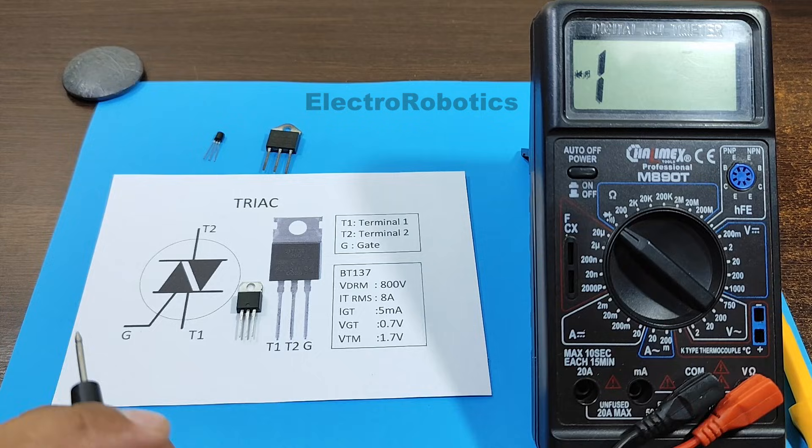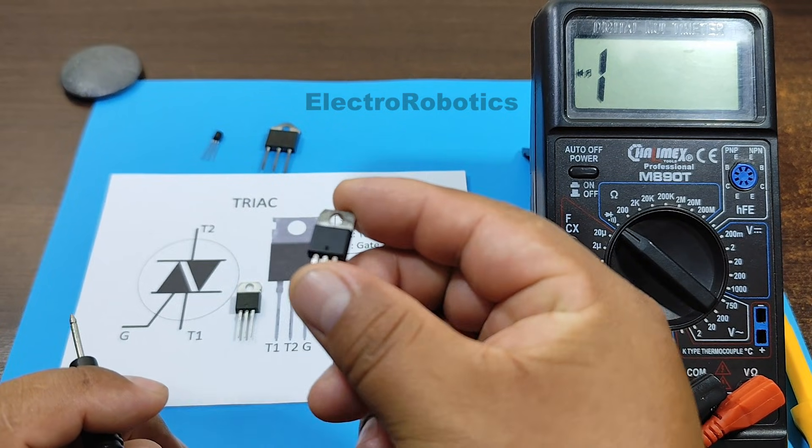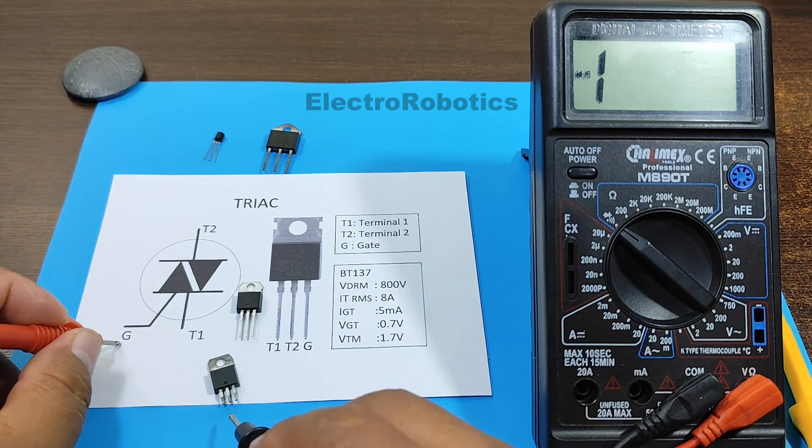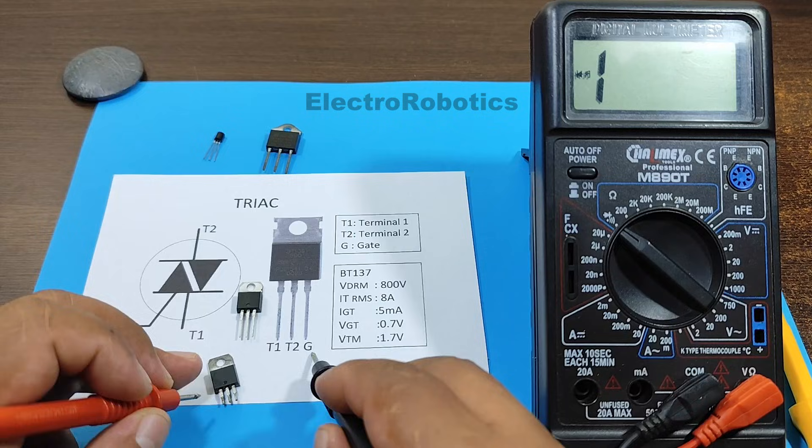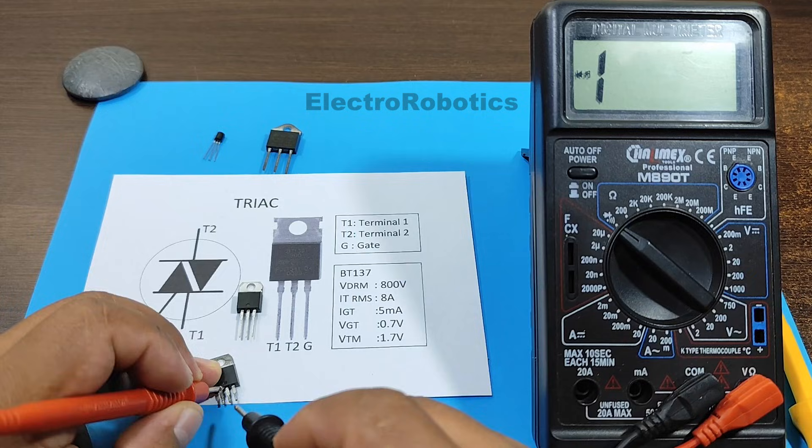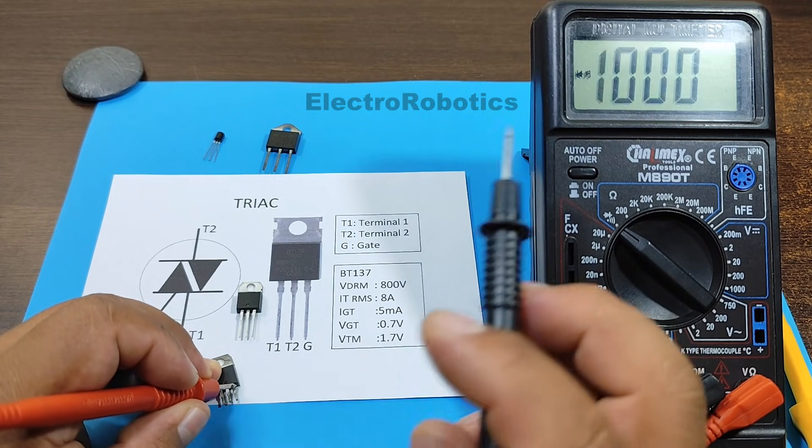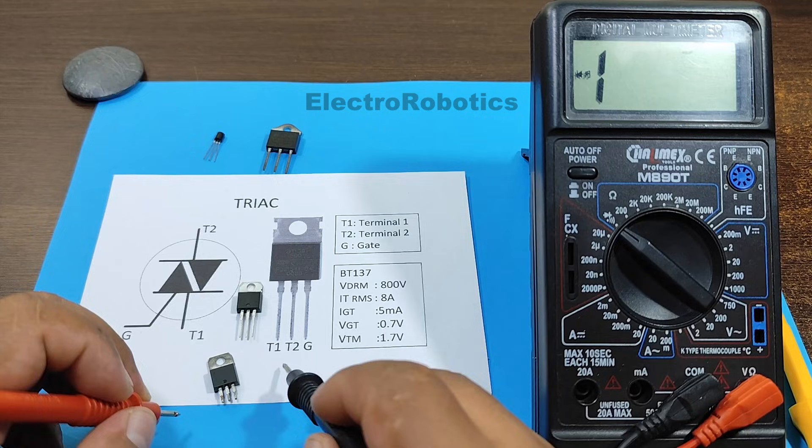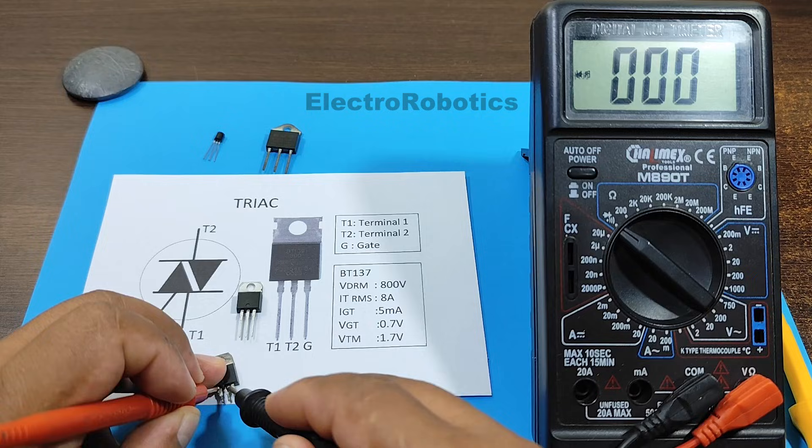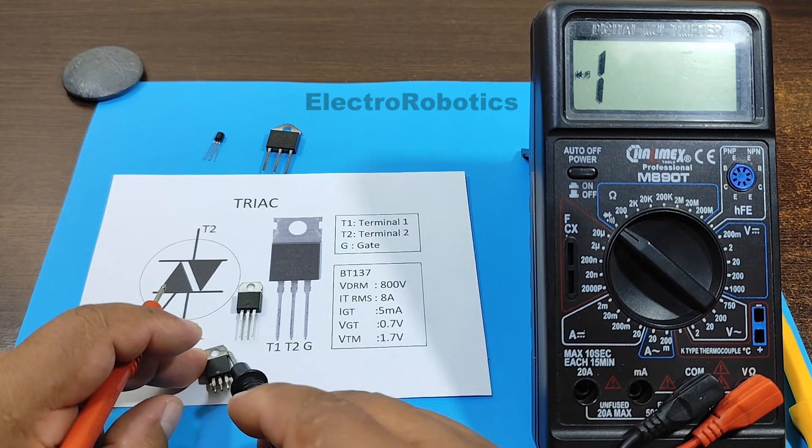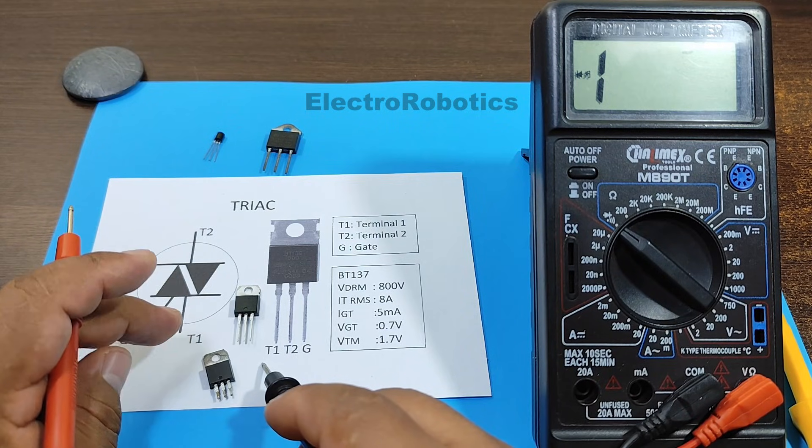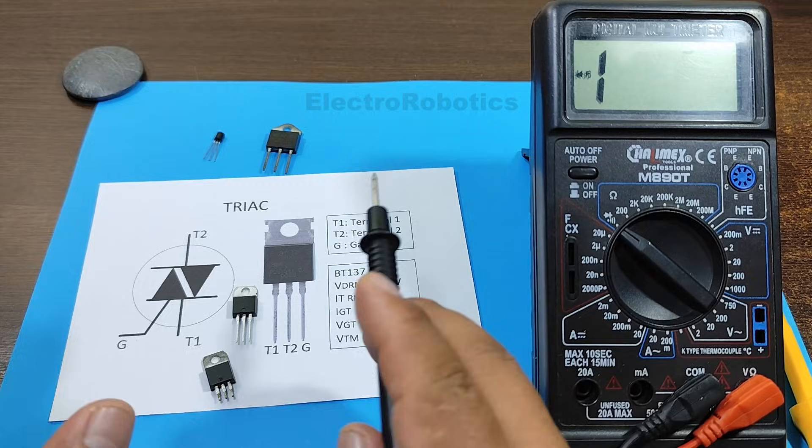Now let's do the test with a triac that is damaged. For example, this triac is damaged. Let's see between the gate and T1. It measures zero ohms. Now, the other way around. It also measured zero ohms. Now, between T1 and T2, it shouldn't measure anything. But it measures zero, meaning it's completely damaged, both between the gate and T1, and between T1 and T2.